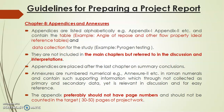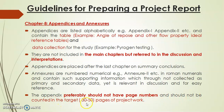Appendices are placed after the last chapter of the project. The main chapters are referred to in discussions and interpretations. Appendices are placed after the last chapter on summary and conclusion, and preferably should not have page numbers and should not be counted in the target 30 to 50 pages.